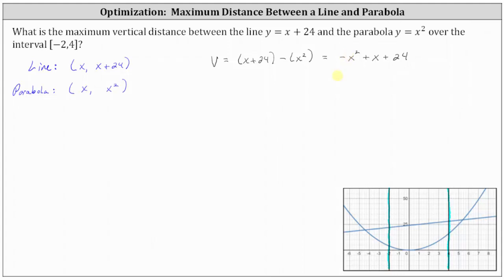We will use calculus techniques to maximize the vertical distance by determining the critical numbers, which is where the first derivative is equal to 0 or undefined. v prime is equal to the derivative of negative x squared plus x plus 24 with respect to x, which is negative 2x plus 1.